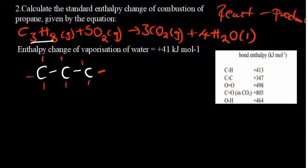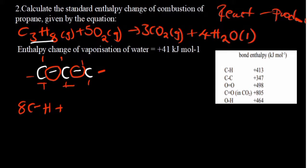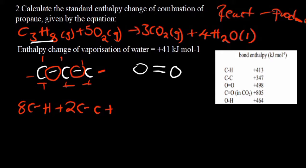You determine the number of carbon to hydrogen bonds by looking at the number of hydrogen atoms. In this case we've got eight, so it's eight carbon to hydrogen bonds. Plus carbon to carbon — there are two carbon to carbon bonds; don't be deceived by the number of carbons. Plus the oxygen molecule, which has a double bond. There are five oxygen molecules, so five oxygen to oxygen bonds. That's the reactants.